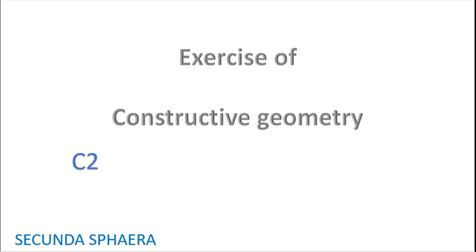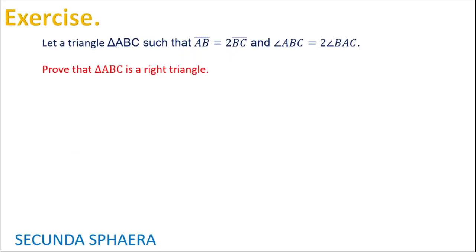Welcome back to the channel. This video is going to present an exercise of constructive geometry. The exercise is: let triangle ABC such that the side AB is the double of BC and the angle ABC is the double of the angle BAC. It is necessary to prove that the triangle ABC is a right triangle.